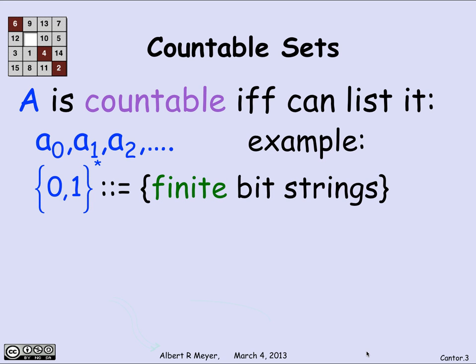Another example of a countable set is the finite binary strings. This is the notation {0,1}*, meaning finite strings of 0s and 1s. Why are they countable? You list all the finite bit strings of length 0 first — there's only one, the empty string. Then list all of length 1: 0 and 1. Then all of length 2: 00, 10, 01, 11, and so on. You list all finite binary strings by length, and within the same length you impose some ordering — interpreting them as binary representations of integers is an obvious way.